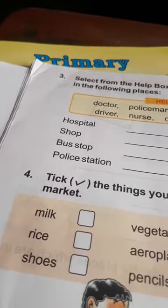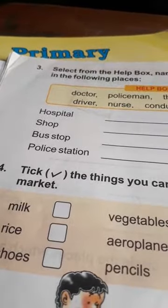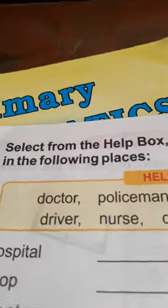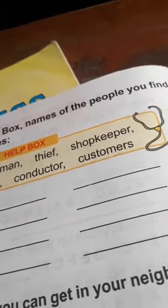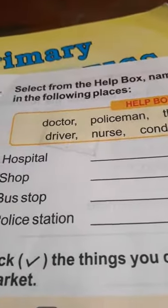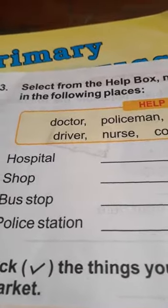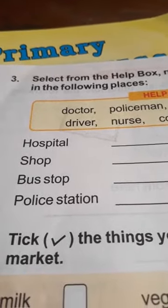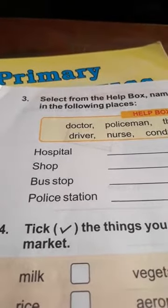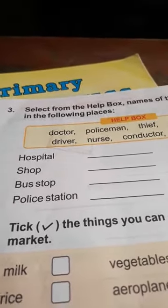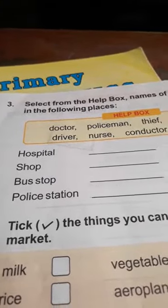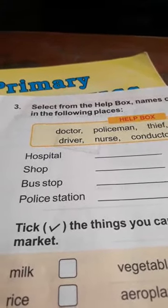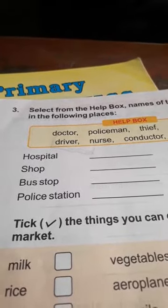Let's start. Question number 3 is: select from the help box. See the question — select from the help box names of the people you find in the following places. You have to select names of the people who are found in these places: in hospital, shop, bus stop, police station.